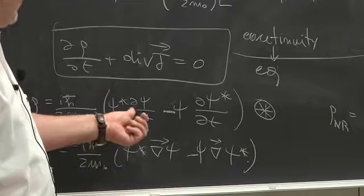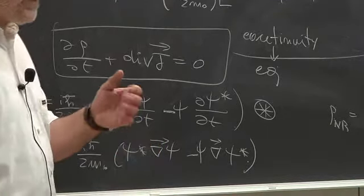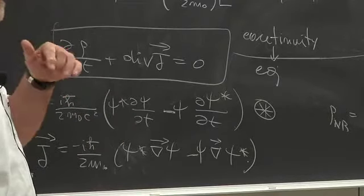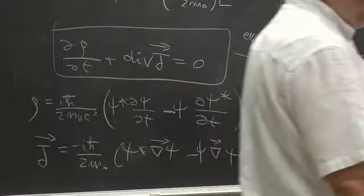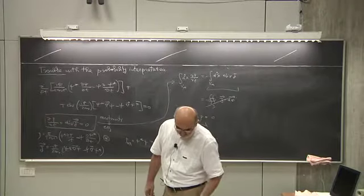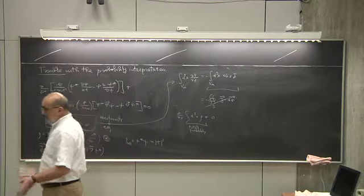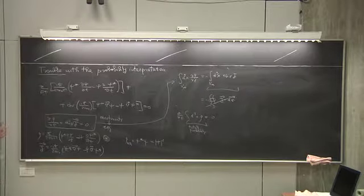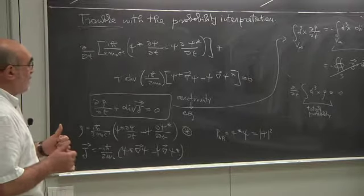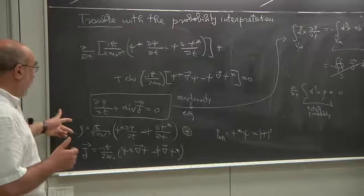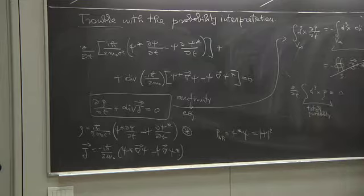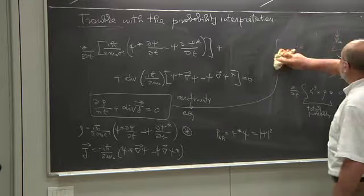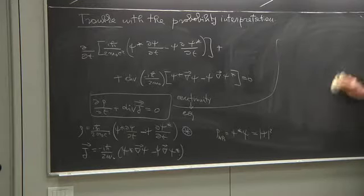All of this is related to the fact that the Klein-Gordon equation is second order in t, requiring both psi and its time derivative as initial data. Dirac started working on this, saying: maybe there are other relativistic equations that are first order in t. That is what Dirac did, and we will come to the Dirac equation later. First, let's check if the Klein-Gordon equation has the correct non-relativistic limit.